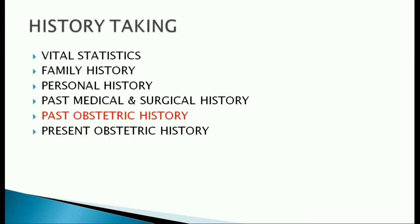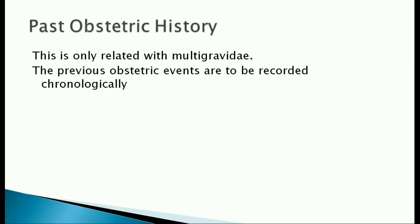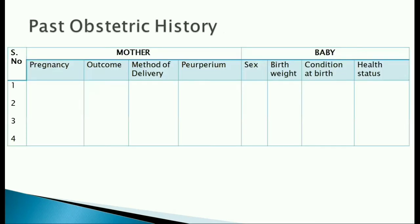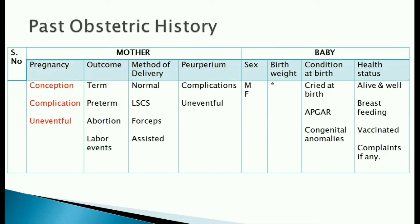In multigravid patients, we collect a detailed past obstetric history in order. It includes the details of both the mother and the baby. The mother's details include the mode of conception — whether spontaneous or with fertility treatment — and whether the pregnancy was uneventful or had complications. Mention the outcome: term or preterm delivery or a miscarriage. Note if the labor was uneventful or if she had intranatal complications, the method of delivery — normal vaginal delivery, LSCS, instrumental, or any other assisted delivery — and if there were any complications in the postnatal period. If not, mention that the puerperium was uneventful.